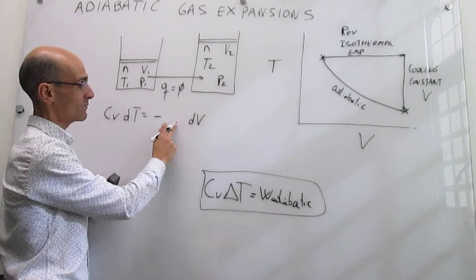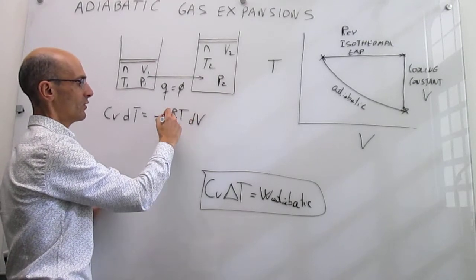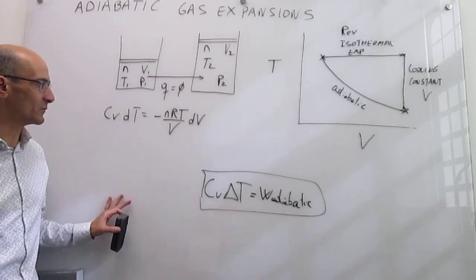So that is the pressure of the gas, which is the same thing as nRT over V, differential V, if this is an ideal gas, and that is an approximation of this work.